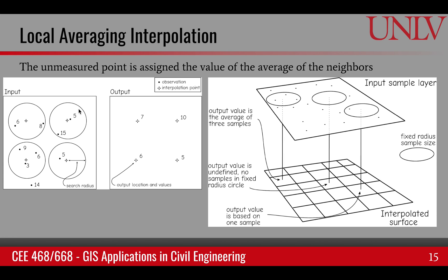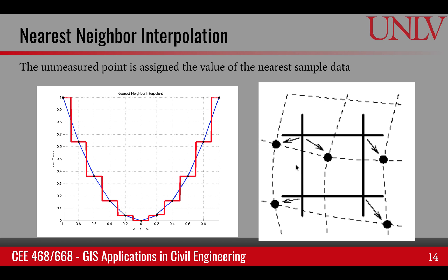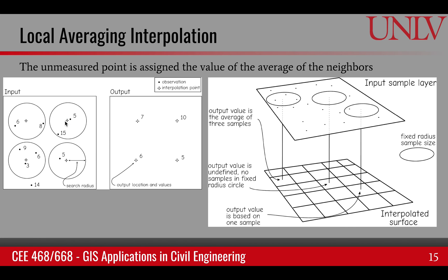The other one is local averaging interpolation. In this case, we assign a value at the unknown point based upon the average value of the neighbors. It's a little bit more accurate than nearest neighbor. I want to point out that in the case of nearest neighbor, we often need to use it when the data is nominal — because we cannot really calculate the average of category names like A and B. But in the case of values like 5 and 15, we can compute an average. So for interval or ratio type data, we can apply local averaging interpolation.